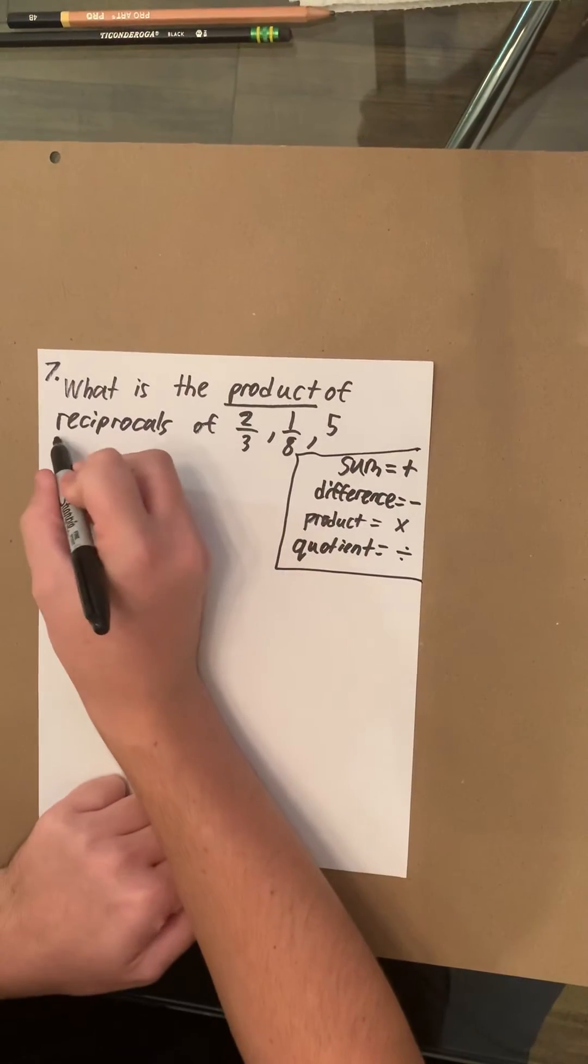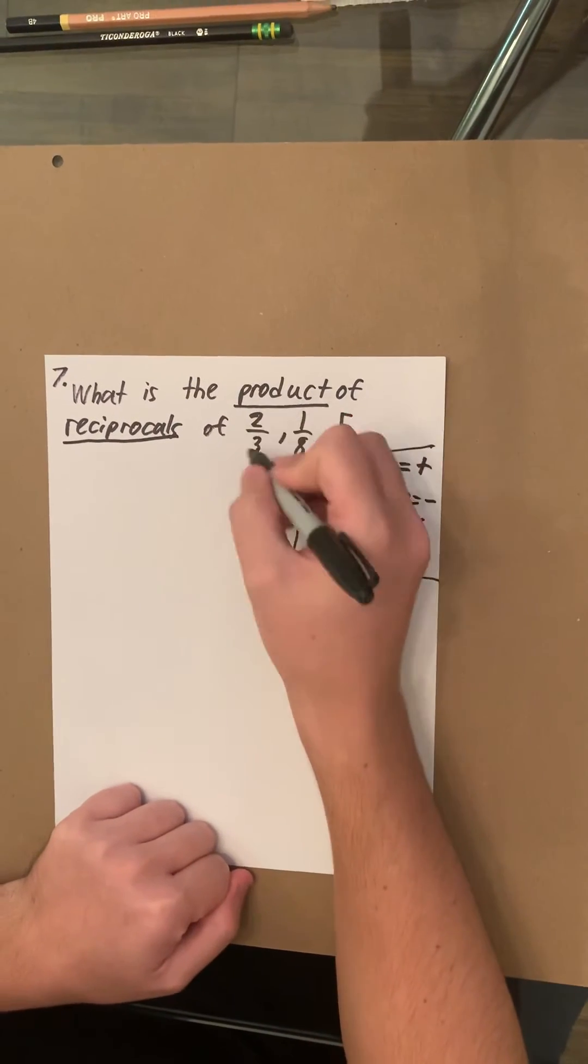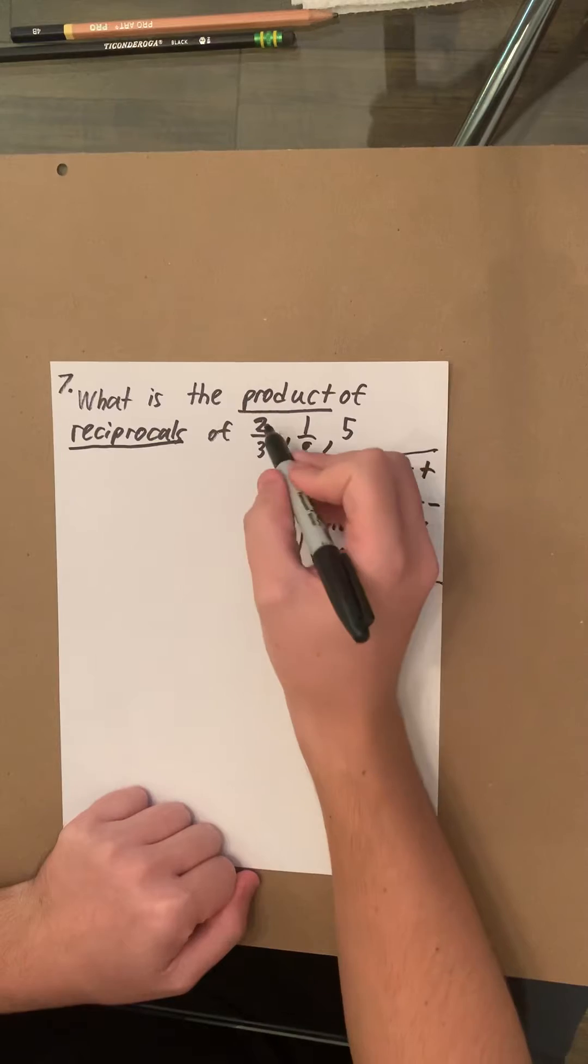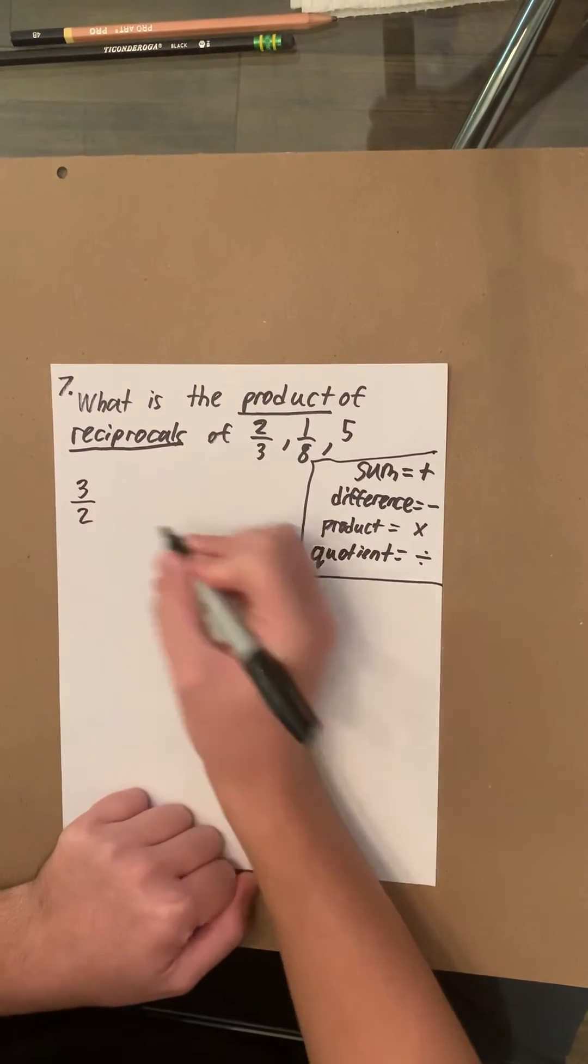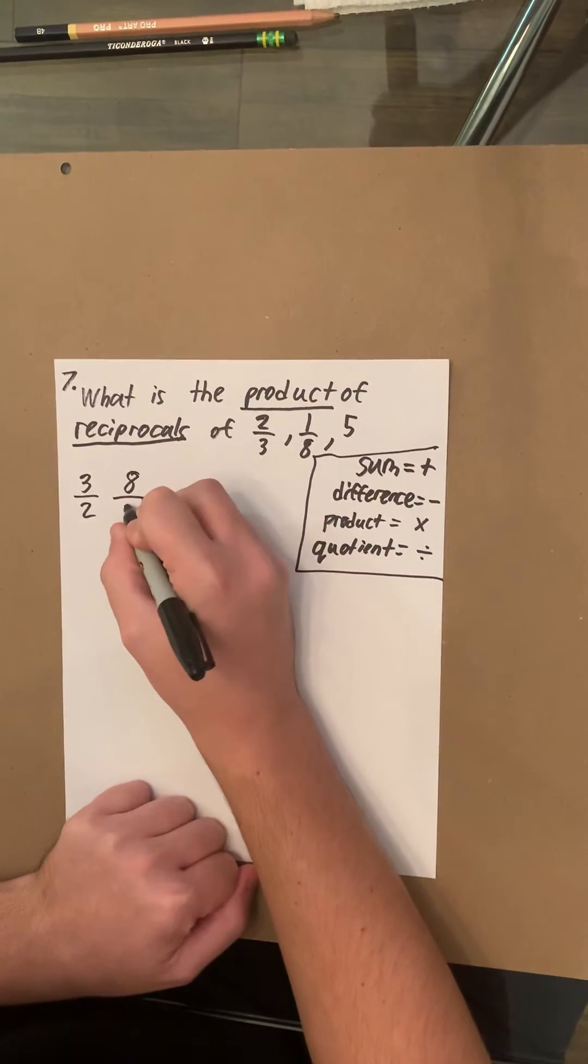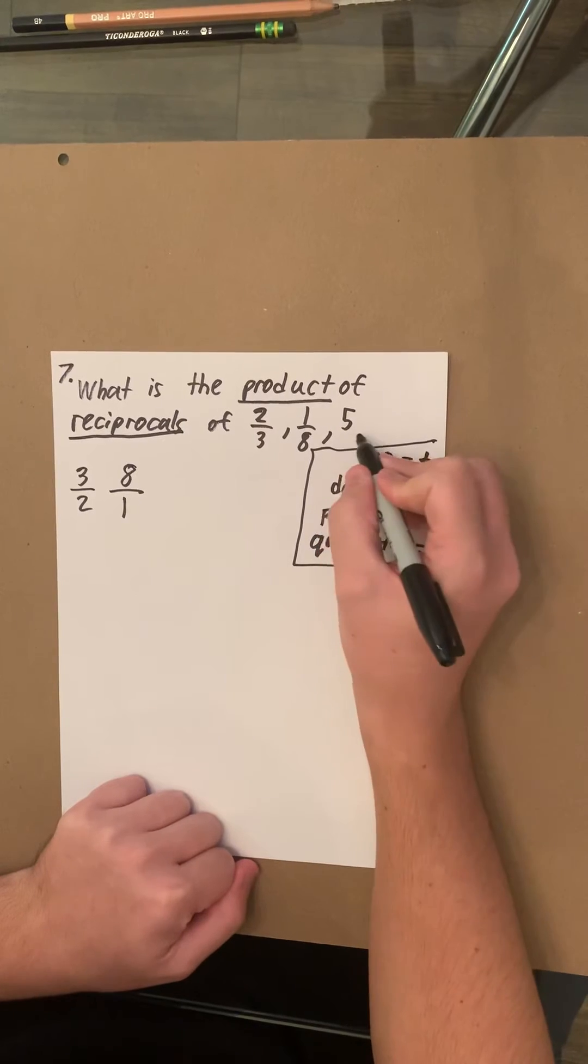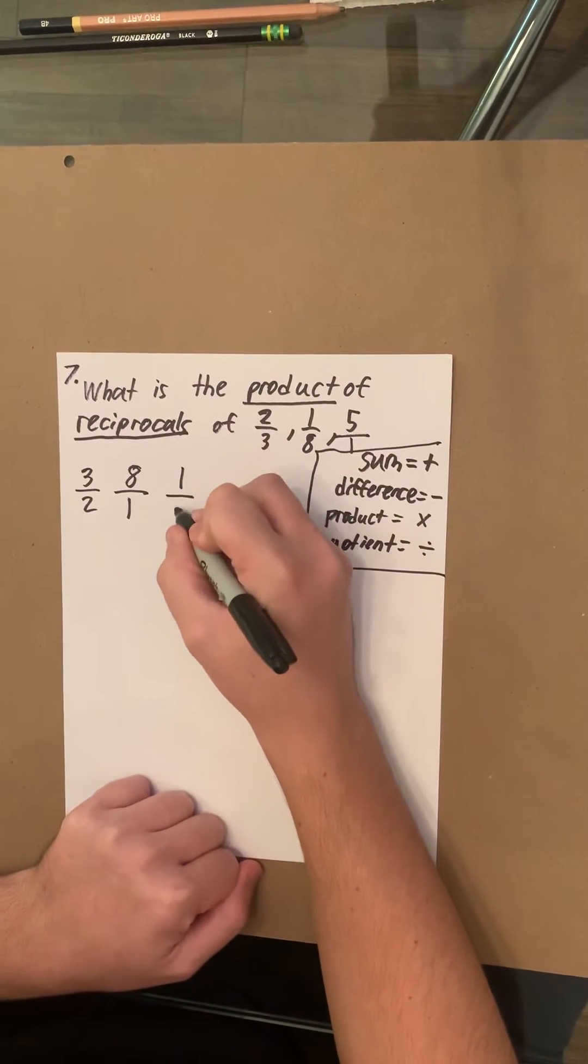The second keyword is reciprocal. So what a reciprocal is, is just a fraction flipped upside down. So two over three, the reciprocal of that is three over two. One over eight, the reciprocal of that is eight over one. Five is the same as five over one, so the reciprocal of that is one over five.